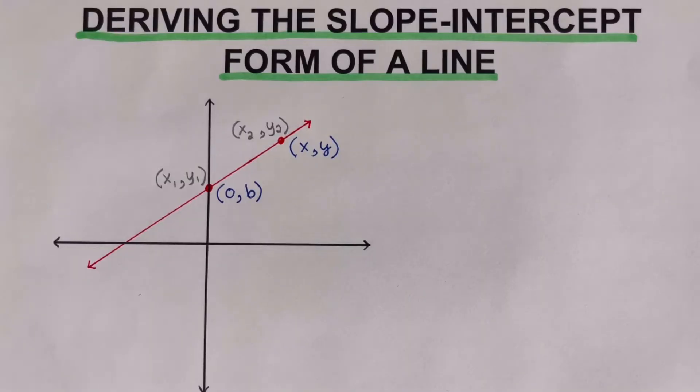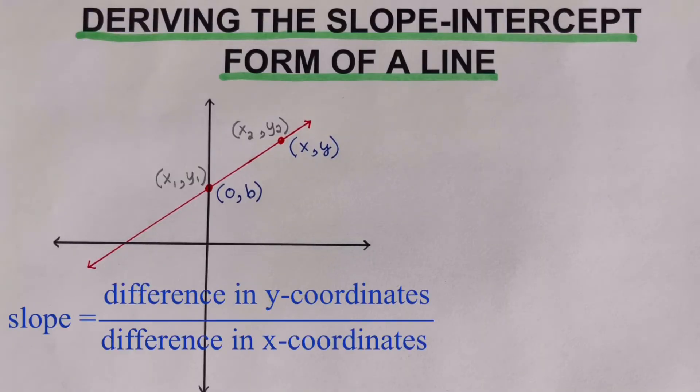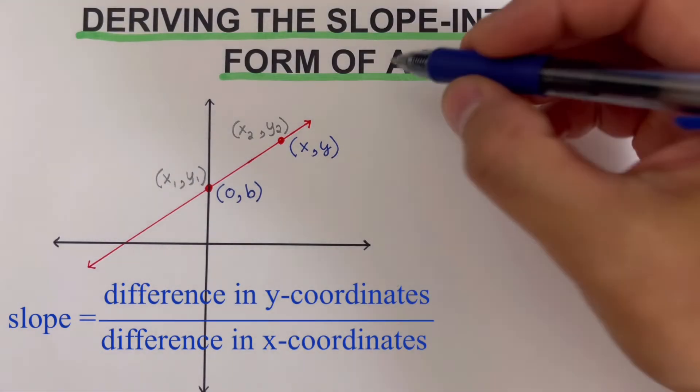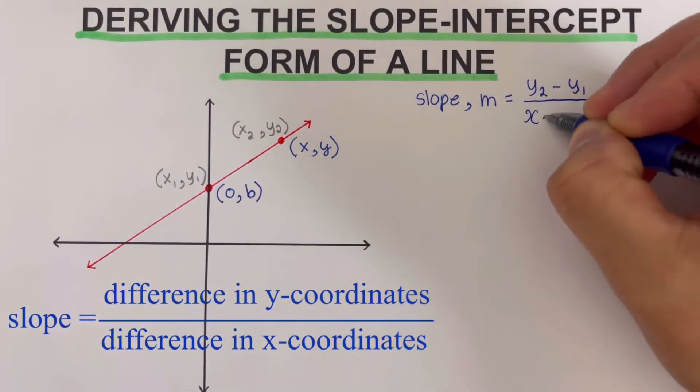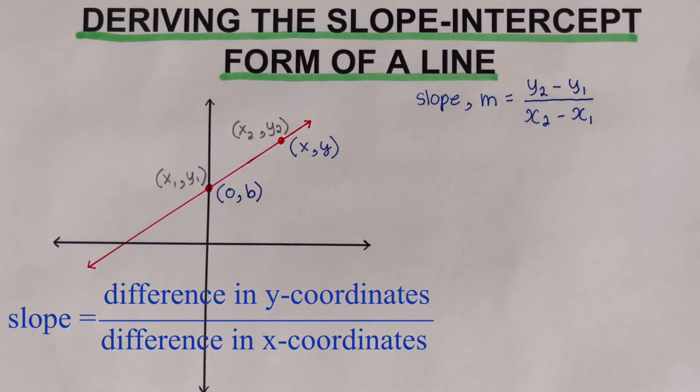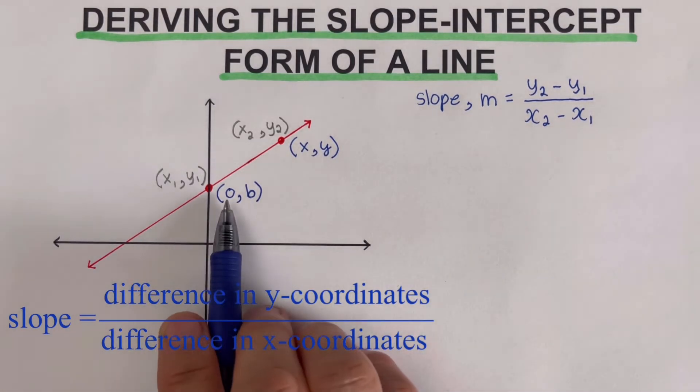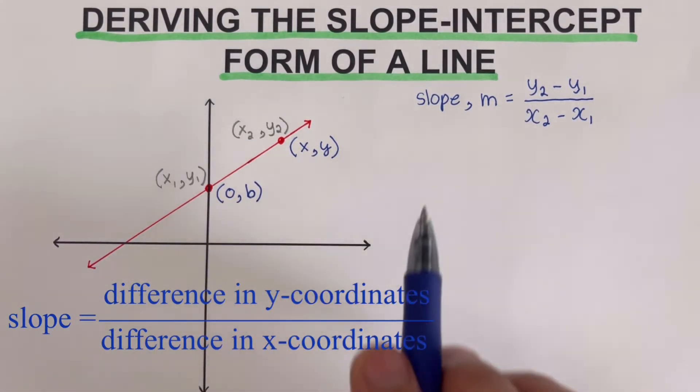Now we remember that slope is the difference in y coordinates over the difference in the x coordinates. We can go ahead and write that equation up here. Now looking at the values or the coordinates that we have created right here, we're going to plug this 0, b, x, y into the equation.